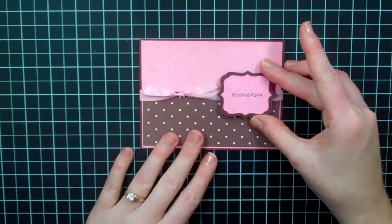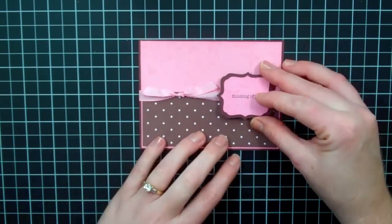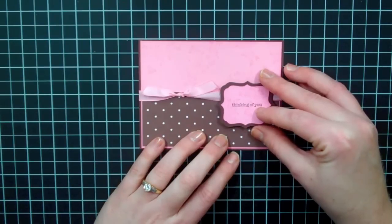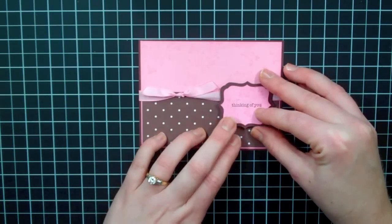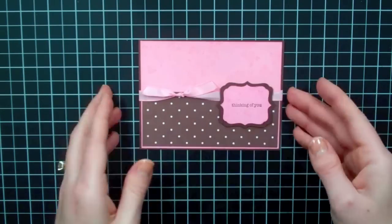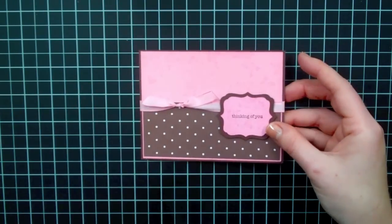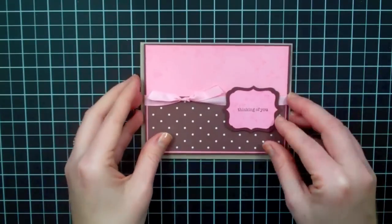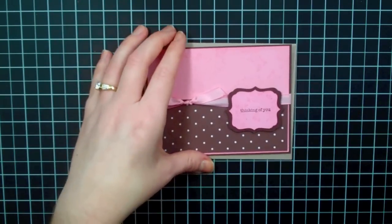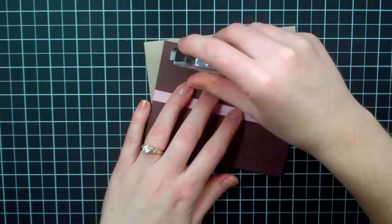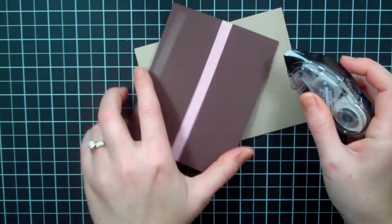And then what I want to do is, instead of having this be straight on middle line with this, I'm going to go ahead and move it to where it's slightly towards the bottom on this and then just put it on there like that. And then the final step is just to mount it right on here. So I'll just take my Snail adhesive and just do that very quickly.